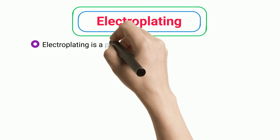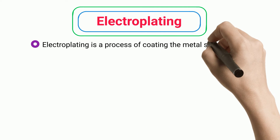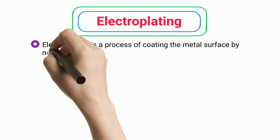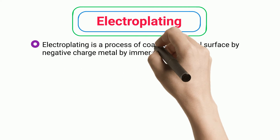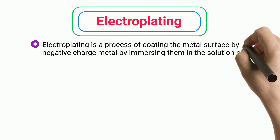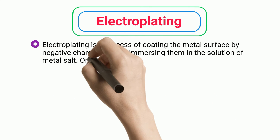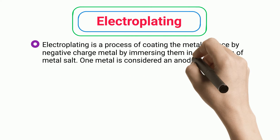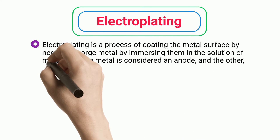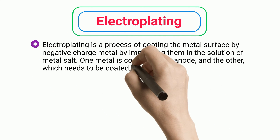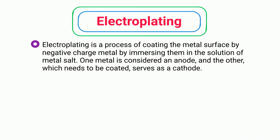Electroplating. Electroplating is a process of coating a metal surface with a negatively charged metal by immersing them in a solution of metal salt. One metal is considered an anode, and the other, which needs to be coated, serves as a cathode.